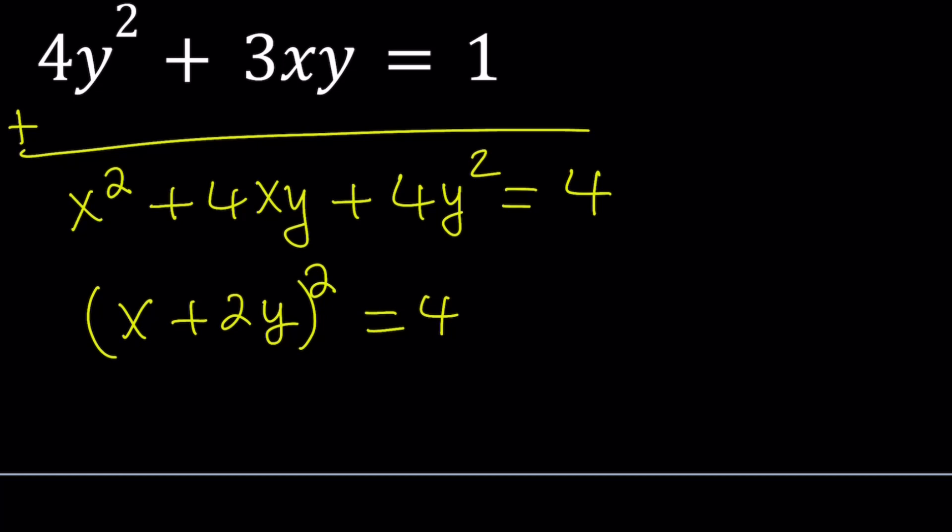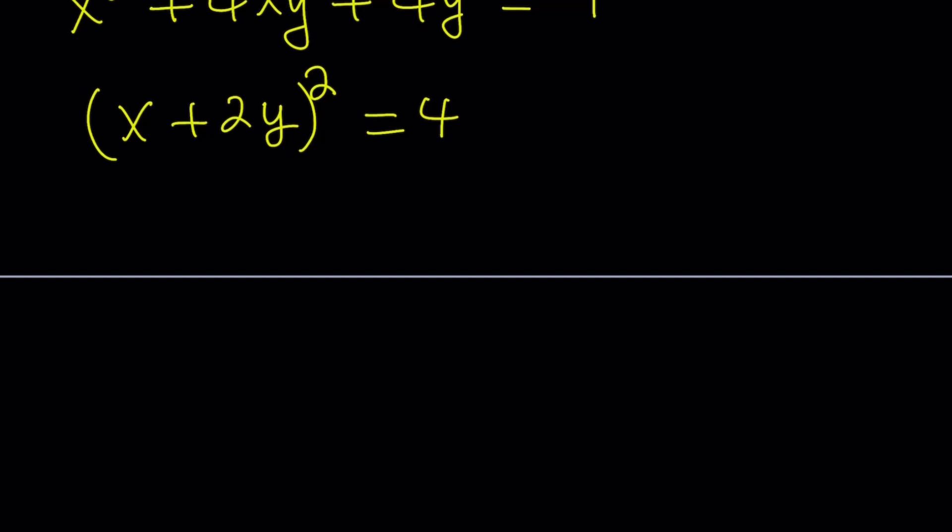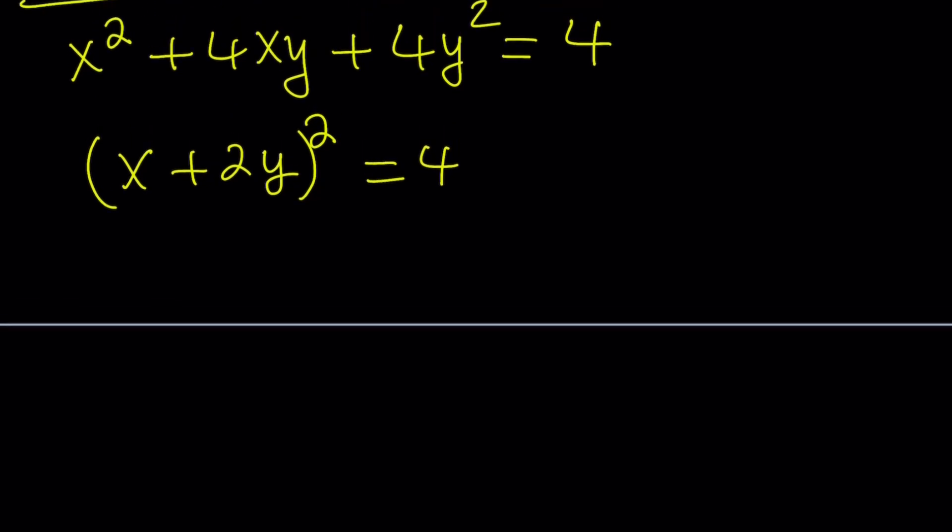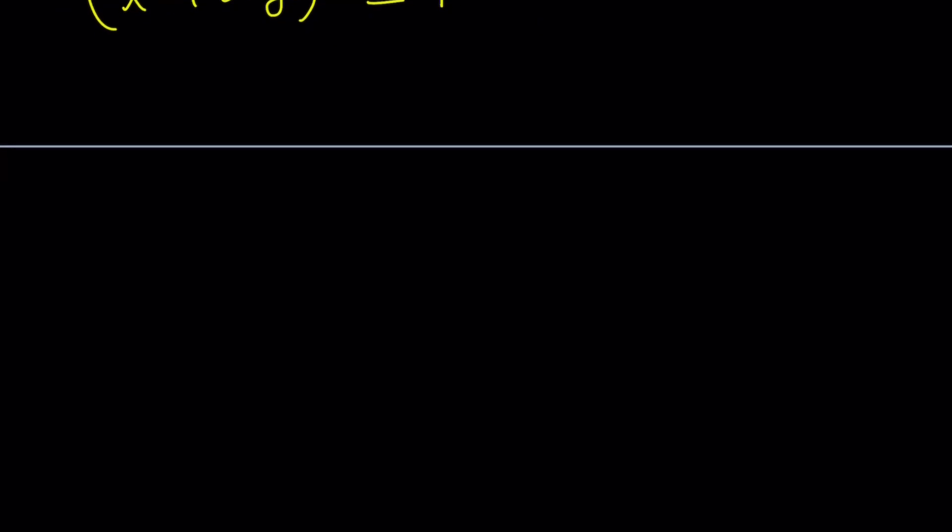And this has two solutions. There are two numbers whose square equals 4, and those numbers are 2 and negative 2. So we're going to be looking at each case. We're going to square root both sides and get x in terms of y. And now we're going to substitute this into our first equation.